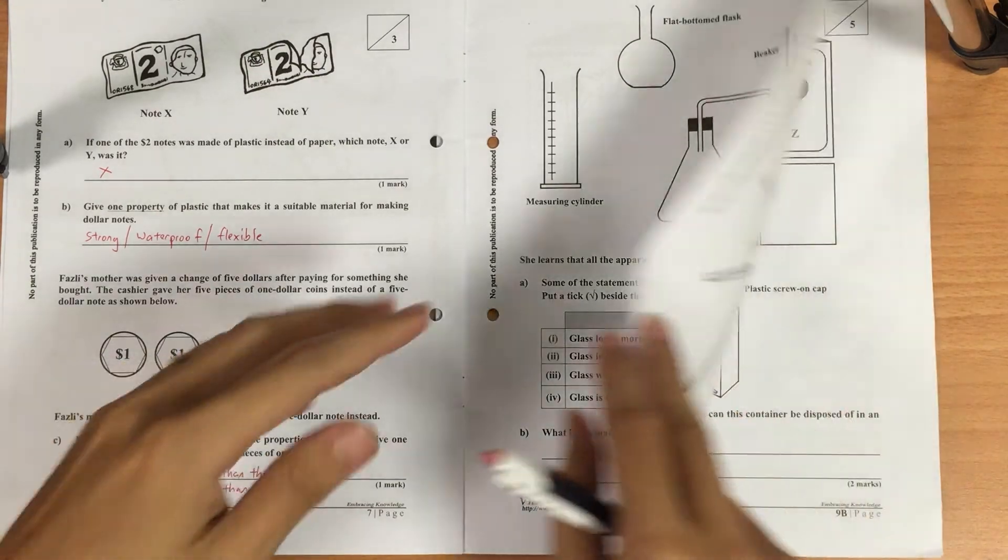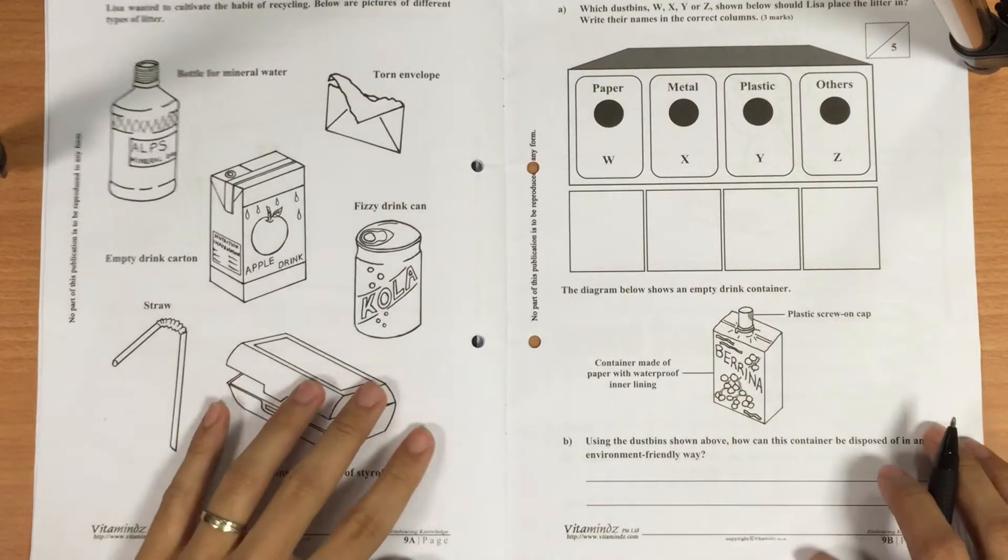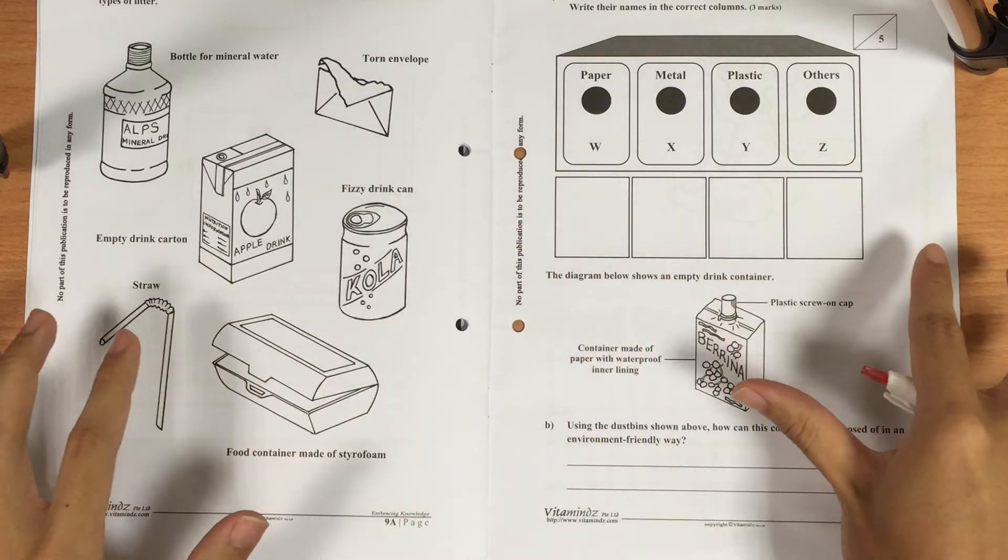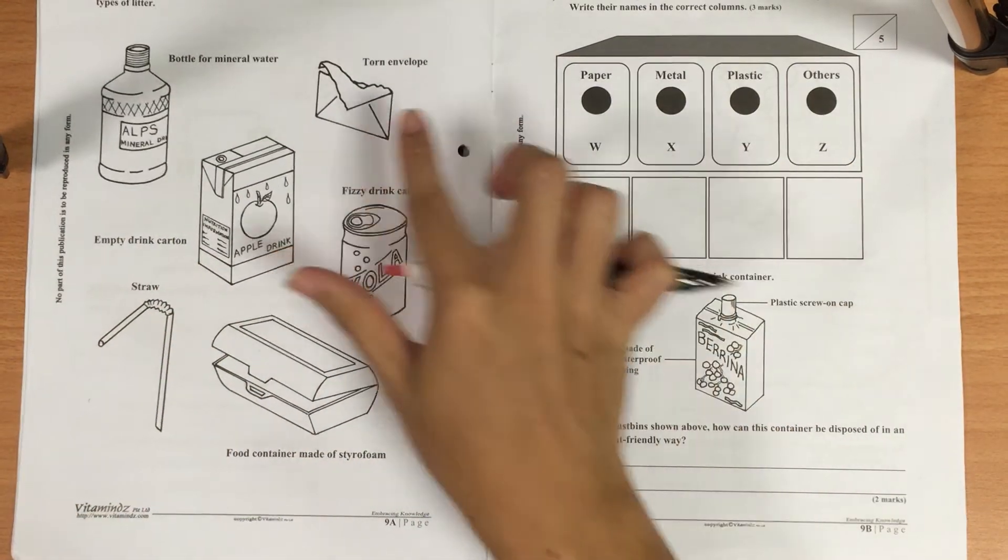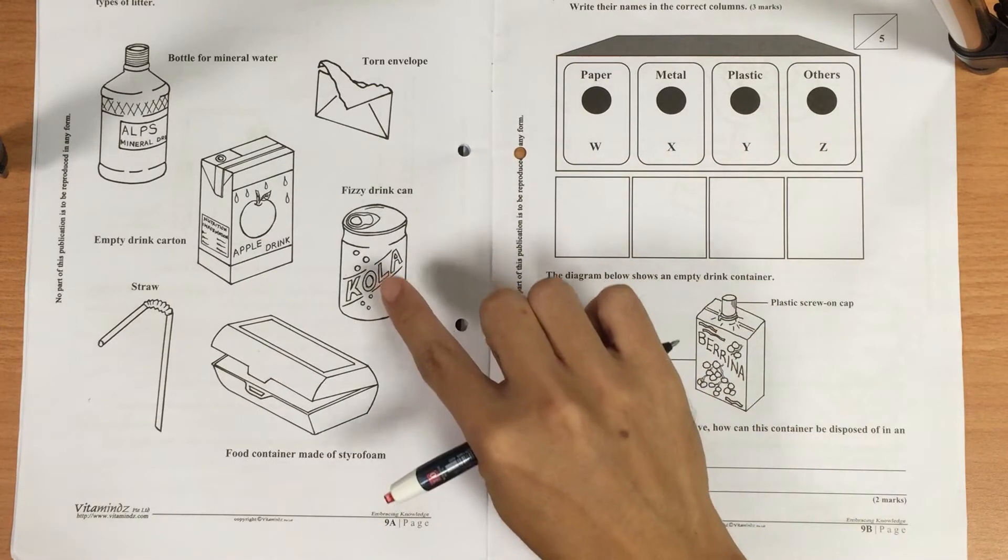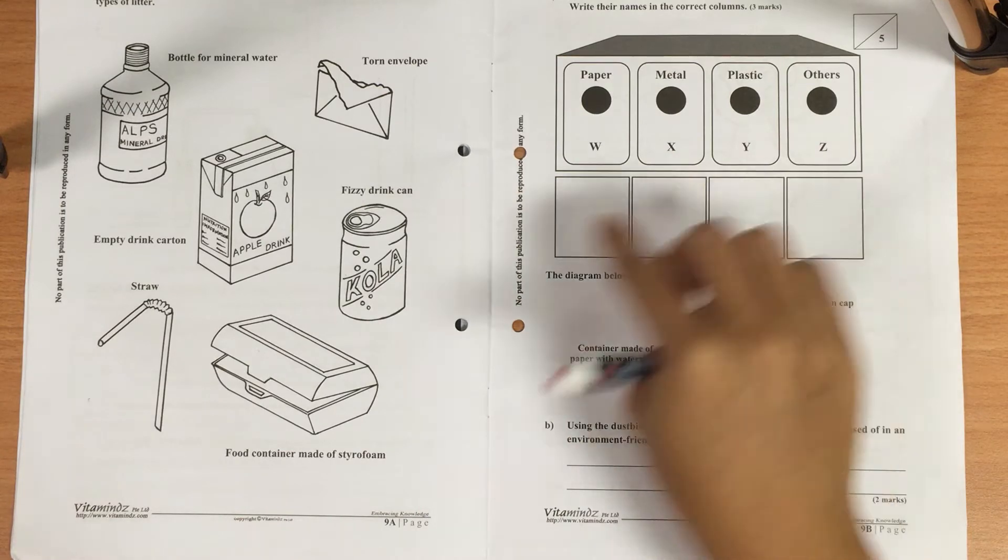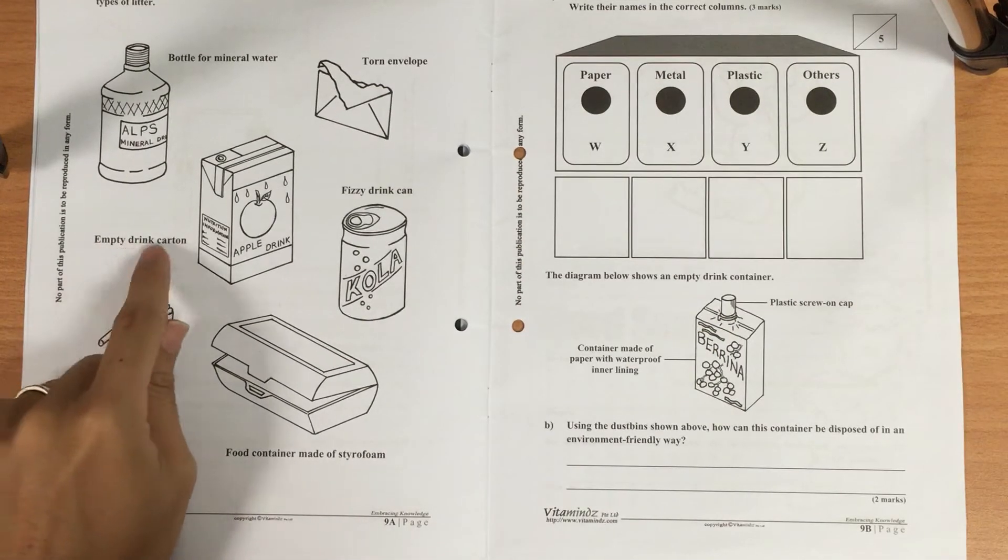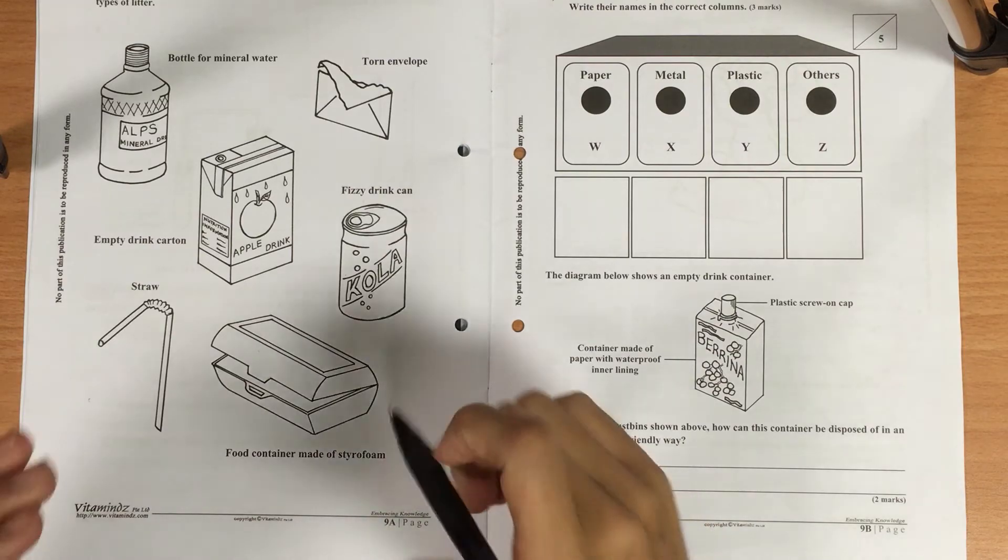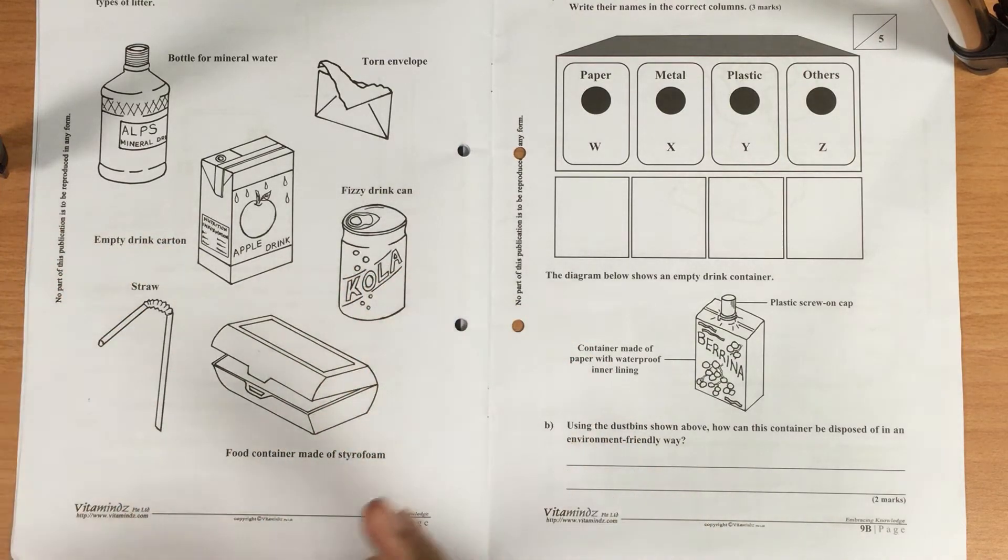Let's move on to worksheet 4. Part A, most of you are able to sort out the different things into the different categories. For example, your torn envelope goes into the paper category, the can goes into the metal category, and so on. Some of you got stumbled by the empty drink carton. Yes, you may say that the outer has a plastic layer, that's why it doesn't - we are able to hold water in it. It is partly true, but the main question is that it is mainly made up of this material. It's mainly made up of paper, it is actually a rather strong cardboard, so I'll put it in dustbin W when I'm recycling this.